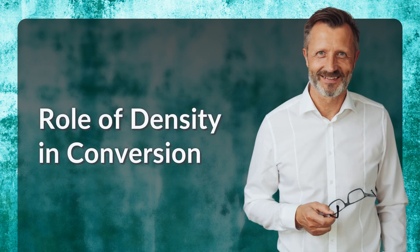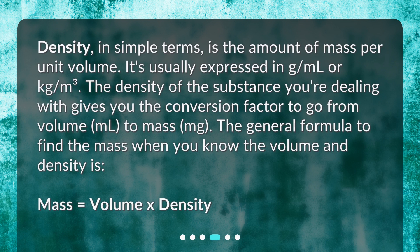Role of density in conversion. Density, in simple terms, is the amount of mass per unit volume. It's usually expressed in grams per milliliter or kilograms per cubic meter. The density of the substance you're dealing with gives you the conversion factor to go from volume, ML, to mass, MG. The general formula to find the mass when you know the volume and density is: mass equals volume times density.